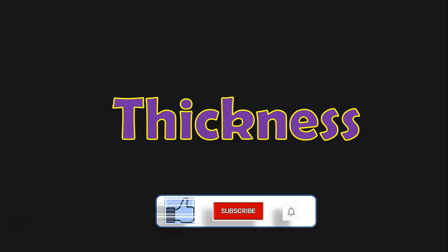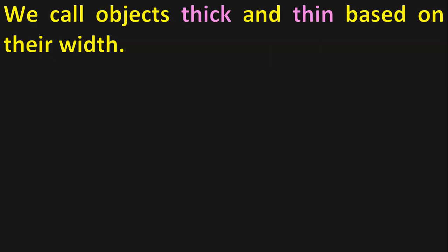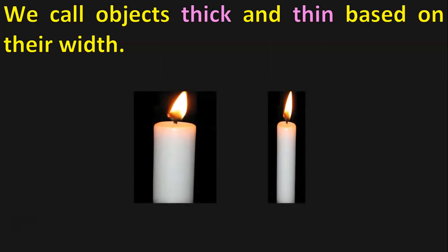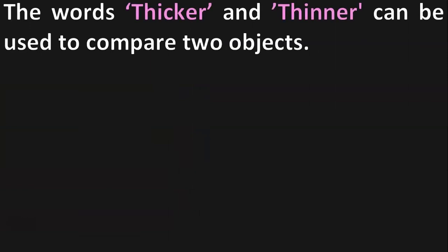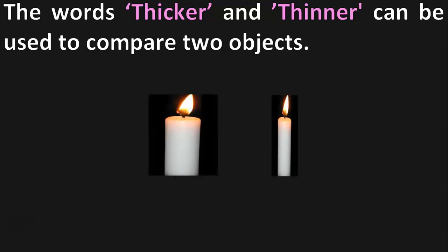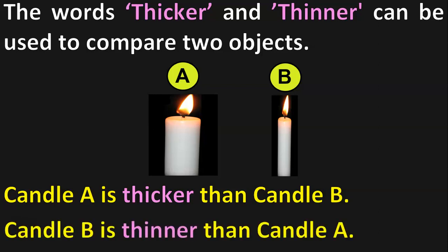The next measurement term that we are going to deal with is Thickness. We call objects Thick and Thin based on their Width. Here we have two candles. Let us name them Candle A and Candle B. Which candle is Thick? Candle A is Thick because its Width is More. Candle B is Thin because its Width is Less. The words Thicker and Thinner can be used to compare two objects. Candle A is Thicker than Candle B because it has a Bigger Width. Candle B is Thinner than Candle A.